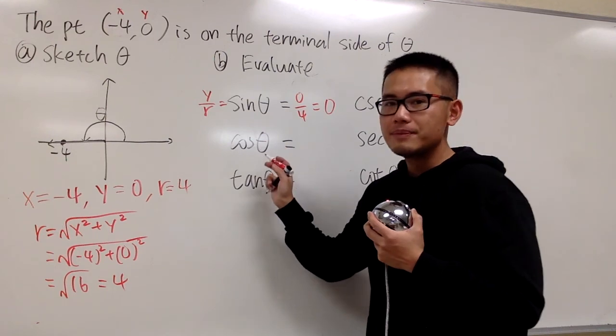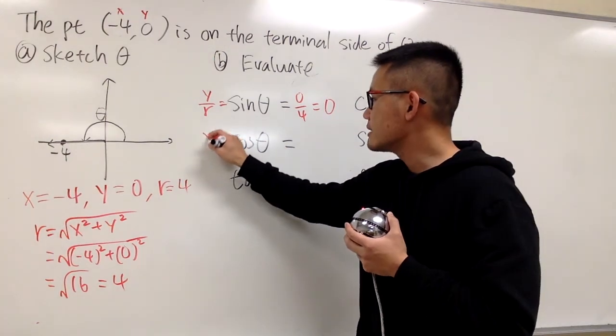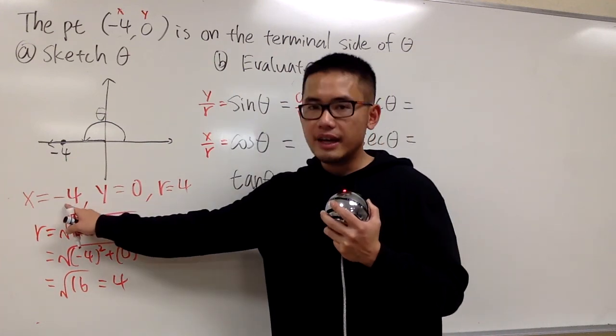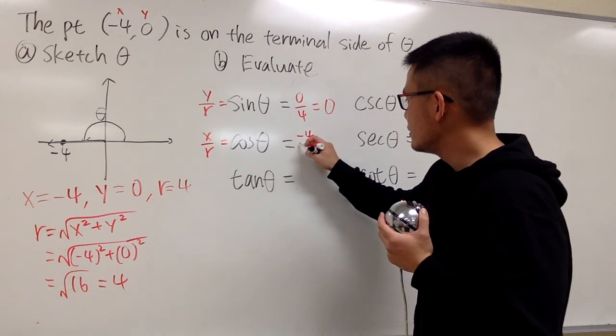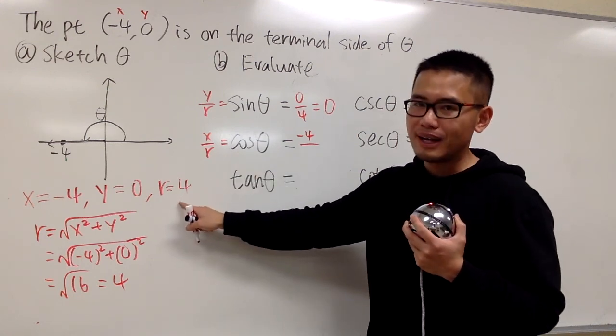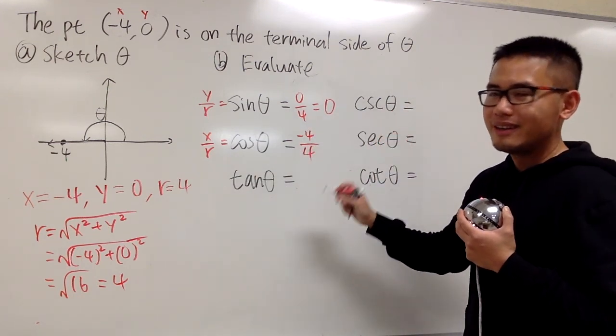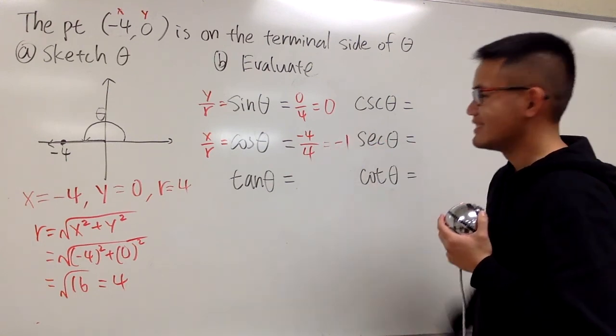Next, cosine θ, cosine is x over r. Now, x is -4, so let me put it down first, over r is positive 4. So we have -4 over positive 4. In this case, we get -1, okay?